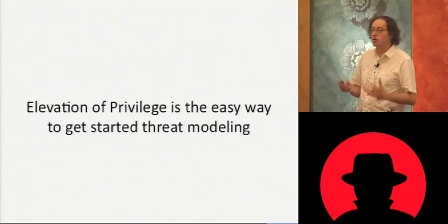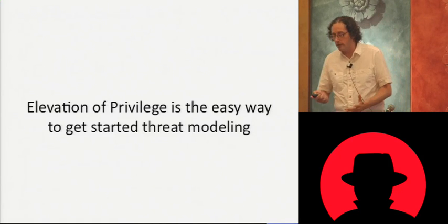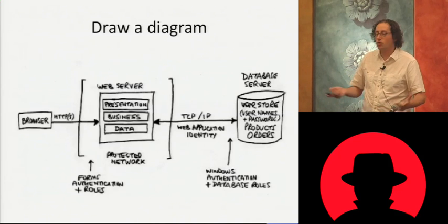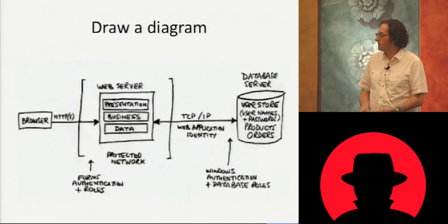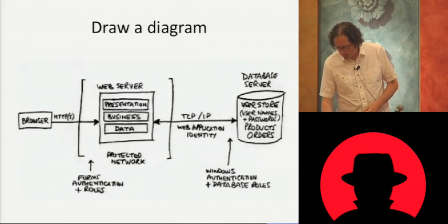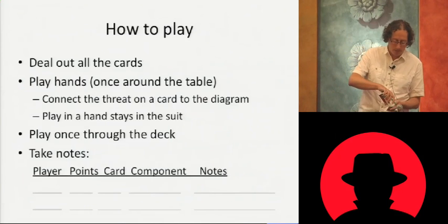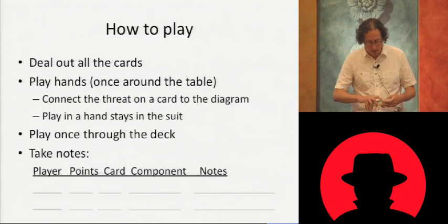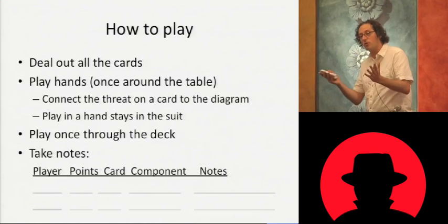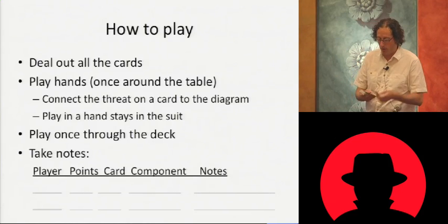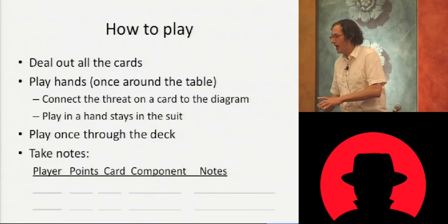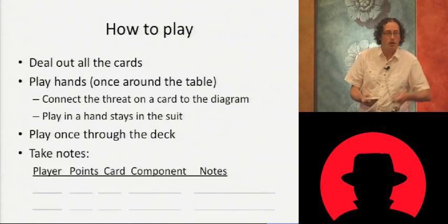Elevation of Privilege is the easy way to get started threat modeling. You start out by drawing a diagram — everybody draws diagrams in software, it's easy. Then you take one of these card decks, which are available online as a free download. They have threats on them in six suits based on the STRIDE threats — spoofing, tampering, repudiation, and so on. You deal the cards out to people and play in hands, going around the table. Each card has a threat on it.